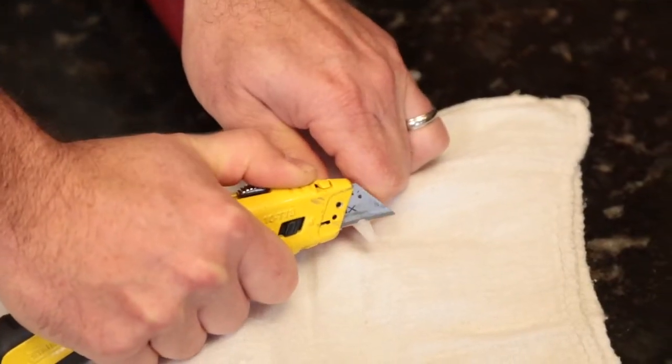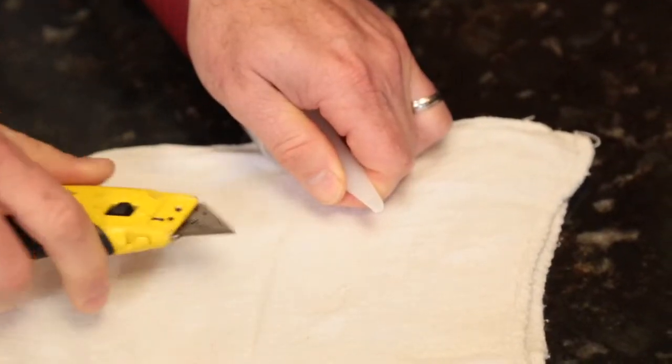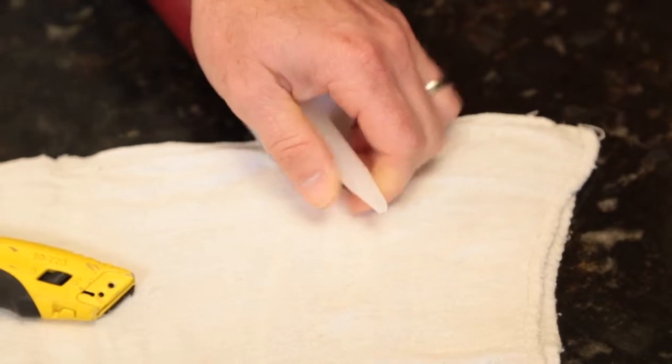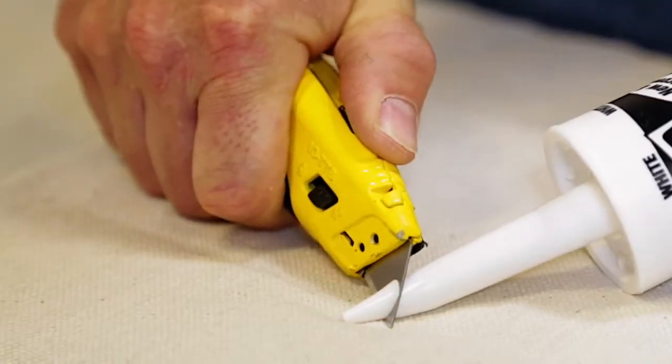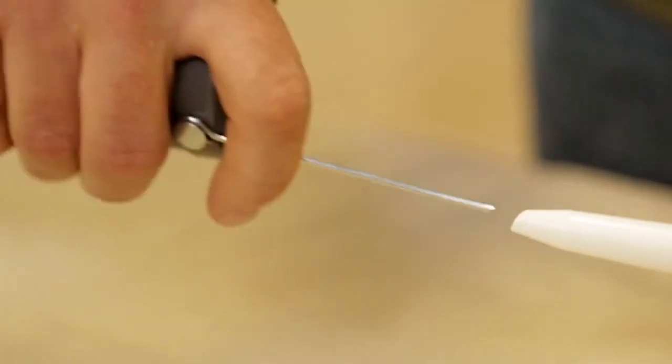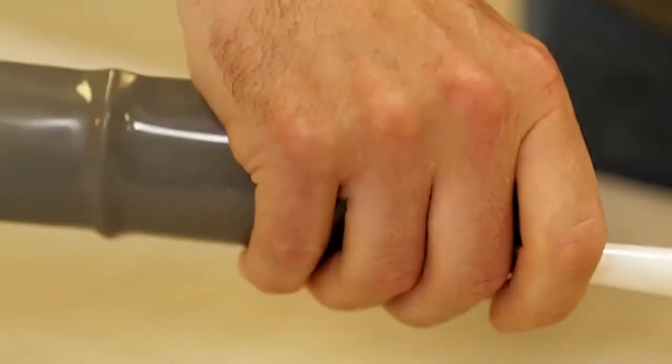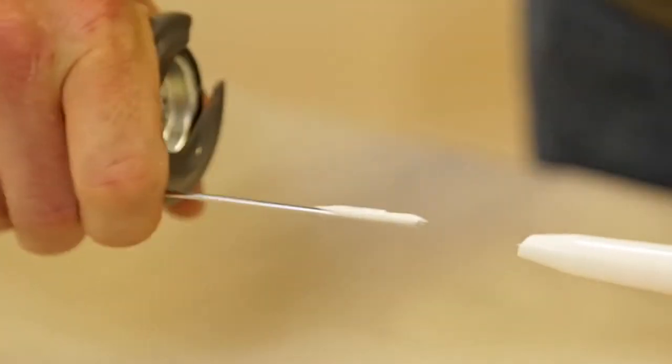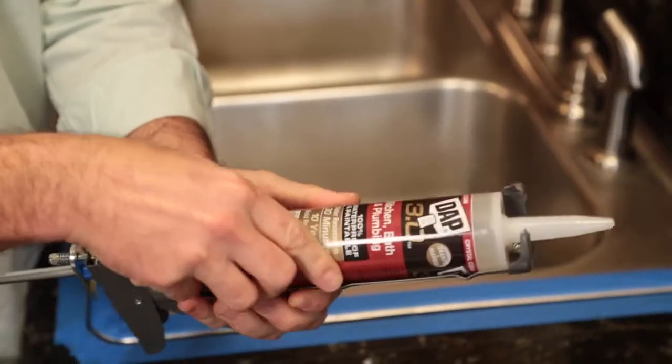To apply the sealant, first cut the nozzle of the cartridge at a 45-degree angle to the desired bead size. Remember, the farther down the nozzle you cut, the bigger the bead of caulk will be. Some sealants have an inner foil seal that will need to be punctured, so be sure to read the instructions on the label. Now load the cartridge into the caulk gun, and you're ready to start sealing.